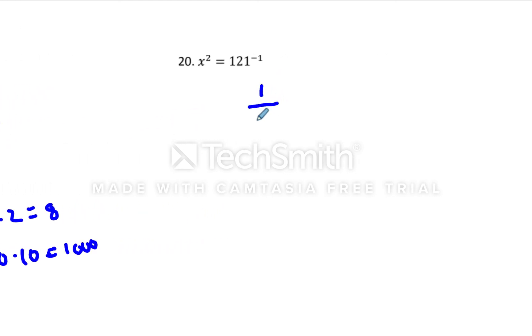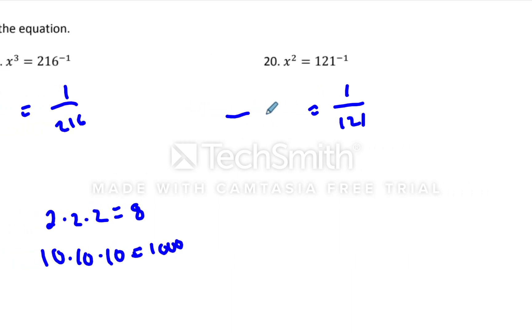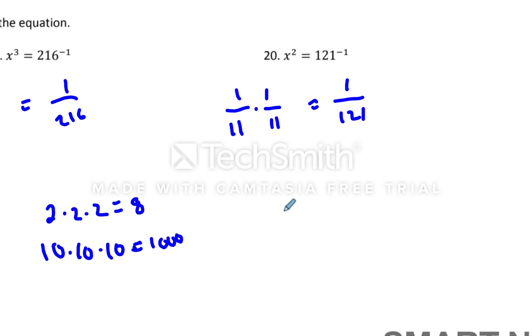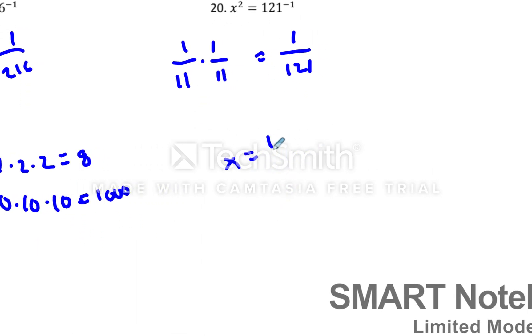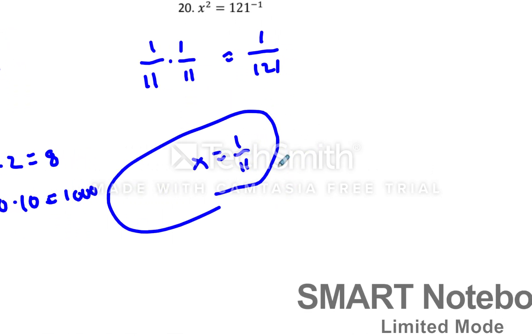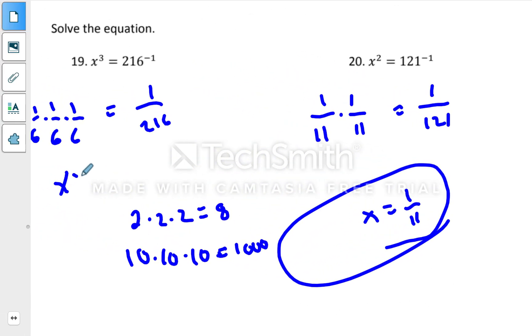Same thing on number 20. Make it a fraction. Again, pause the video if you think you can figure this out. And something times something equals 1. Well, that's 1 times 1. And then 11 times 11 would get you 1 over 121. So the x would equal 1/11. And by the way, over here, x equals 1/6.